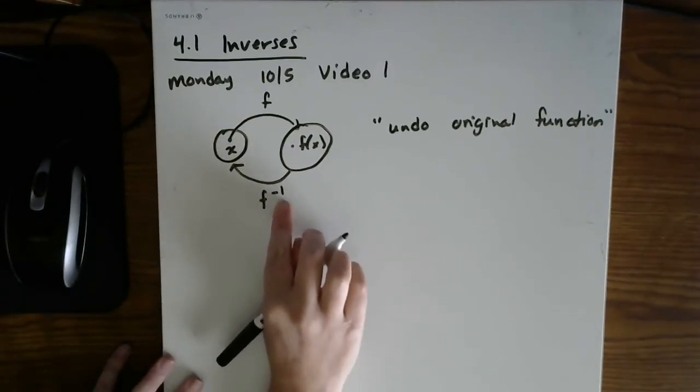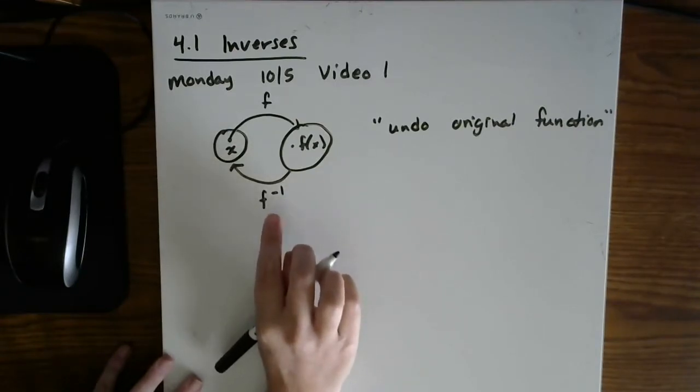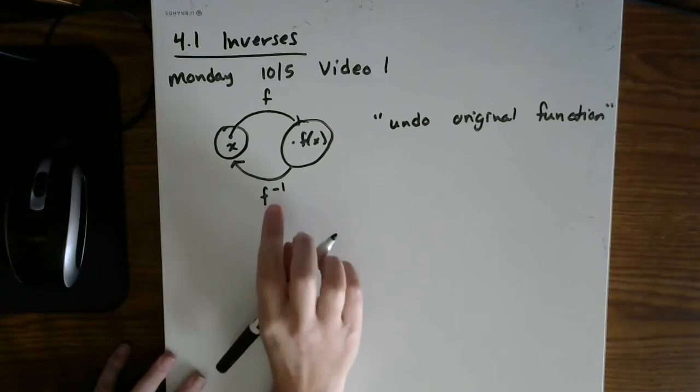We'll use a superscript of negative one. Now, this is not an exponent, so don't treat it like an exponent. Rather, it's just the notation for inverses.